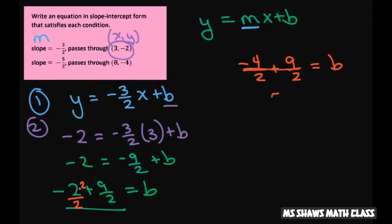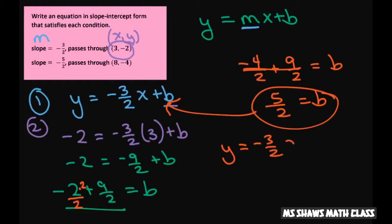So this is going to be 5 halves equals b. And then you plug this back into your b. You have y equals negative 3 halves x plus 5 halves. And that's your slope-intercept.